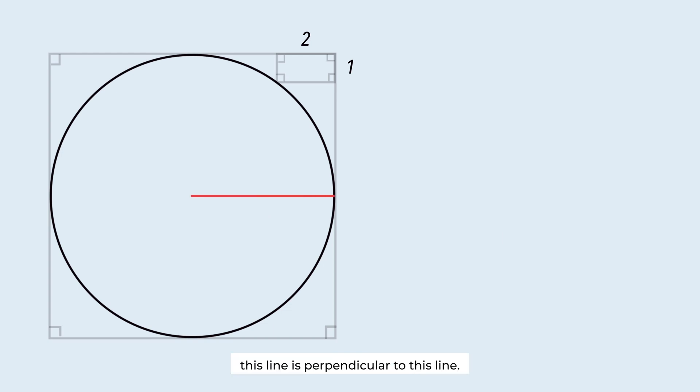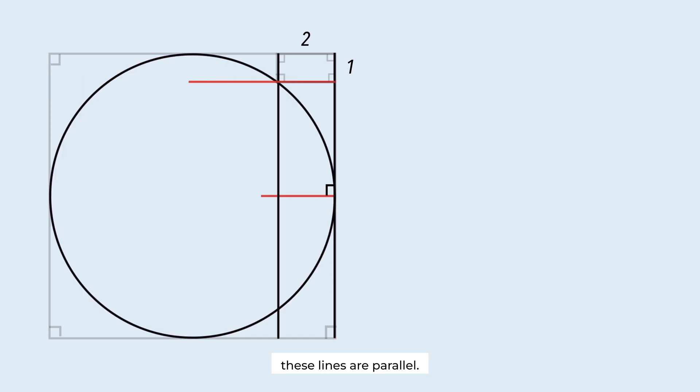First, this line is perpendicular to this line. It is because this point is the tangent point between the circle and this line. Let's extend these two lines. These lines are parallel and these lines are also parallel. Connect the center of the circle to this point. A right triangle is formed.